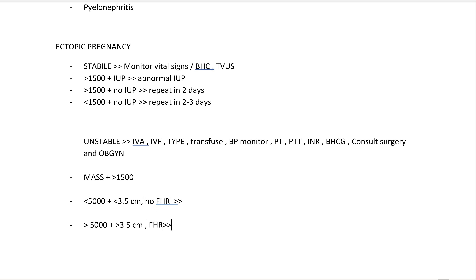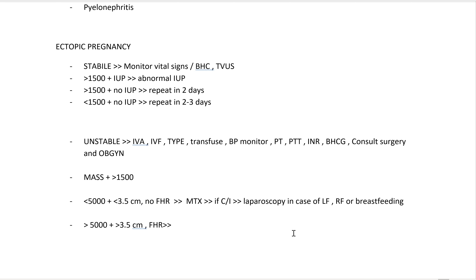If beta HCG is less than 5000 and the mass is less than 3.5 cm, give methotrexate — it is small enough that methotrexate can resolve it. However, if there are contraindications to methotrexate, such as liver failure, renal failure, or breastfeeding, then do laparoscopy. If beta HCG is more than 5000, mass more than 3.5 cm, or fetal heart rate is present, methotrexate is unlikely to work and we go straight to laparoscopy.